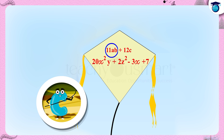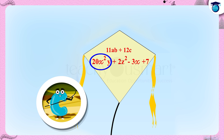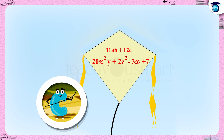C has two algebraic expressions. 11ab plus 12c has two terms: 11ab and 12c, where the variables are a, b, and c. In the expression 20x squared y plus 2z squared minus 3x plus 7, there are four terms: 20x squared y, 2z squared, minus 3x, and 7. Here, the variables are x, y, and z.